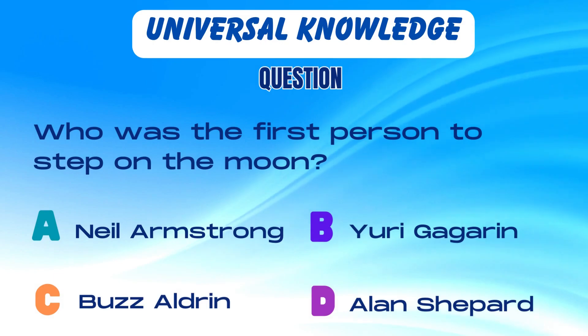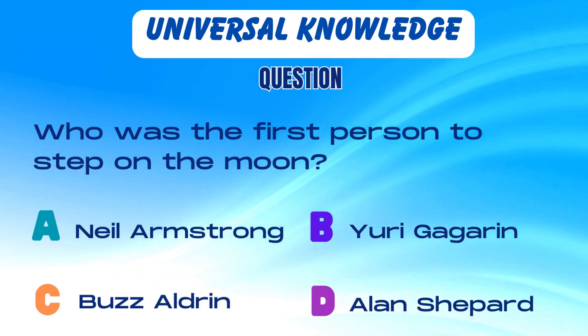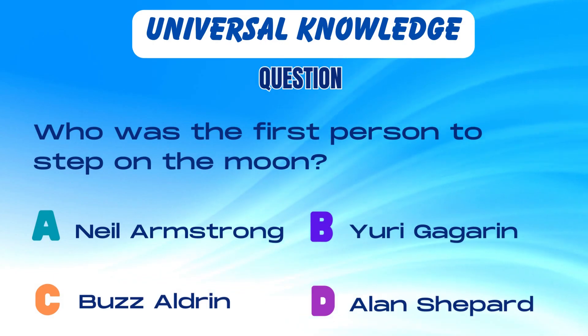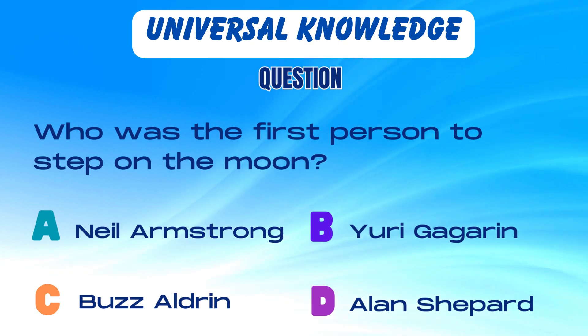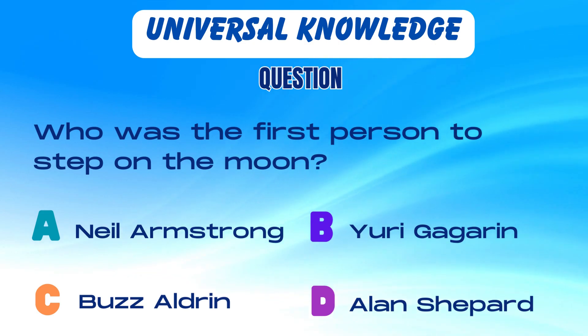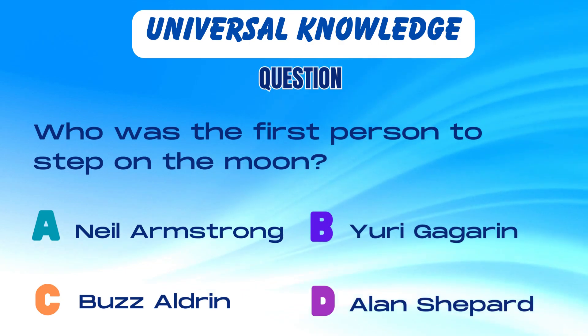Who was the first person to step on the moon? Is it A. Neil Armstrong, B. Yuri Gagarin, C. Buzz Aldrin, or D. Alan Shepard?